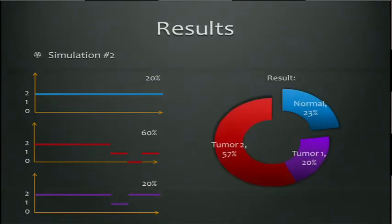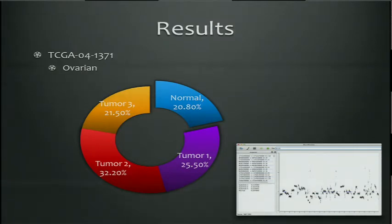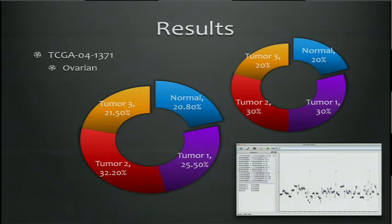If you change the simulation profile to include a third tumor subclone, the result is comparable: roughly 20% of one subclone and 57% of the other, with 23% normal. We then applied the method to actual TCGA data, and the algorithmic result closely matches what we derived by hand from the chromosome pileup figure. This specific example is ovarian cancer.